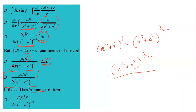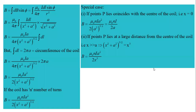This is the final expression for magnetic induction at the axial point of a current-carrying coil. For special cases: if x = 0 (point at the center), we get the magnetic induction at the center. If x is very large, the term reduces to approximately x³, giving a simpler formula for the magnetic induction at a far axial point.